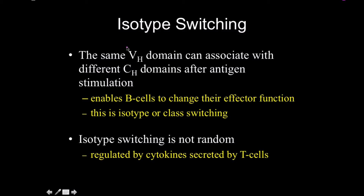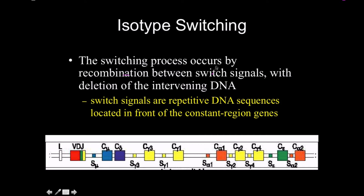Now let's talk about how we control the effects — how the immune system controls its response to antigen. The same VH domain can associate with different constant domains after antigen stimulation, enabling B cells to change their effector functions. This is known as isotype or class switching. It's extremely well controlled — not a random process — and is regulated by cytokines from CD4 helper T cells.